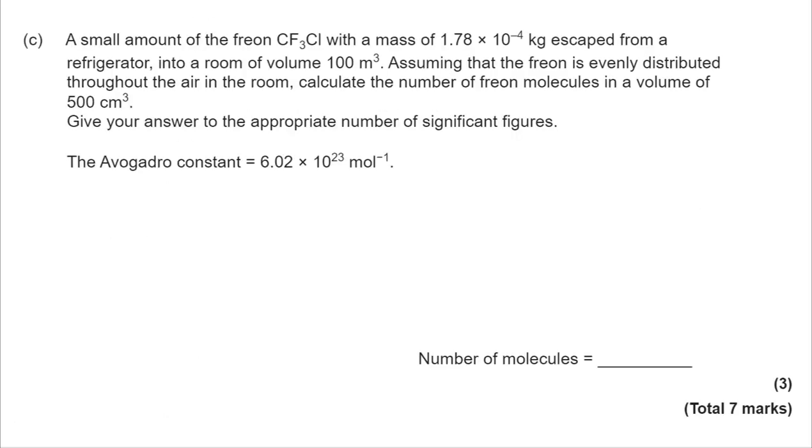OK, moving on to part C. A small amount of the Freon CF3CL with a mass of 1.78 by 10 to the minus 4 kilograms escaped from a fridge in a room of volume 100 meters cubed. Assume it's evenly distributed. Calculate the number of Freon molecules in a volume of 500 cm cubed. So the first thing to do is find the MR of CF3CL. That comes to 104.5. You just use the mass numbers on the periodic table provided.